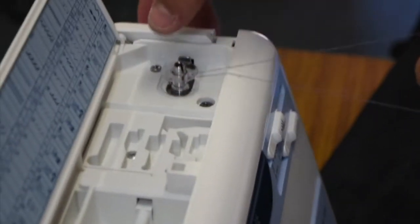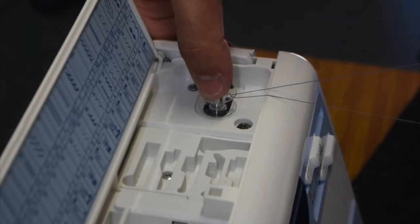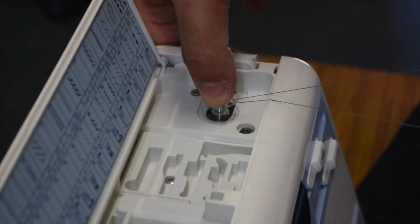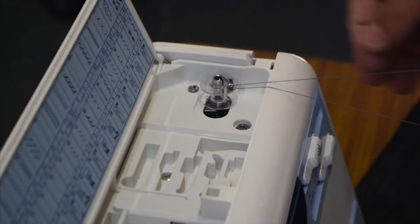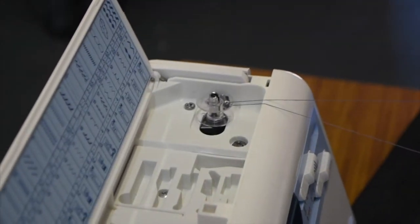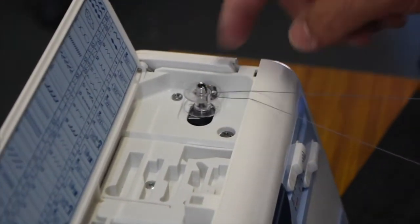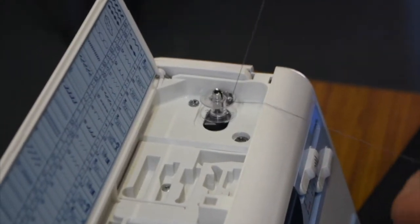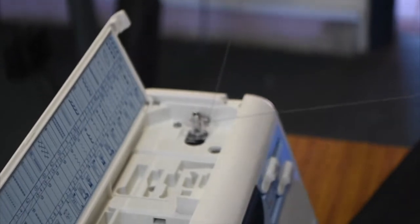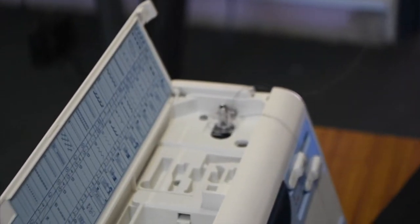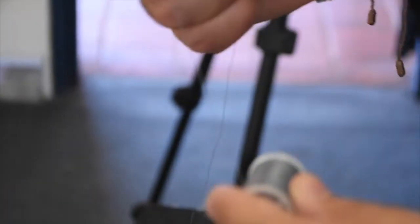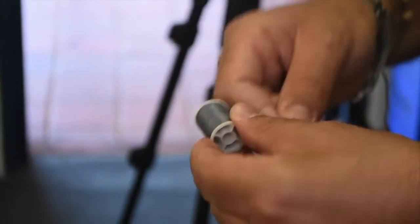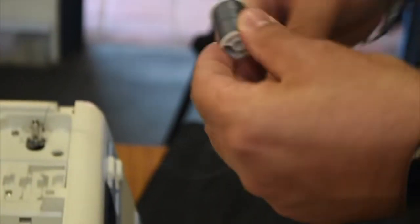We click it to the right like so. What that does is lock the bobbin into place. Now do you notice I can still move the thread? Make sure you don't pull it out. Now what we do is grab our thread and wind it long enough to put it in our rod here.